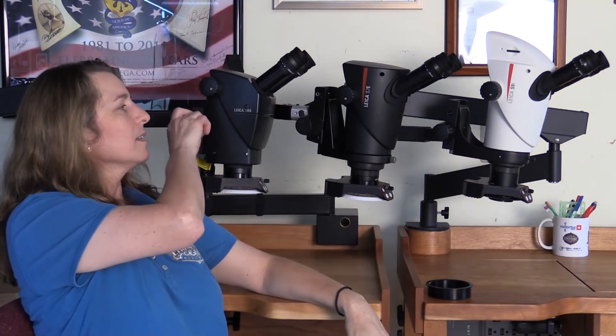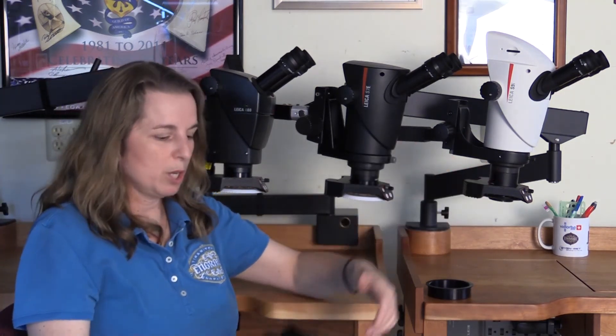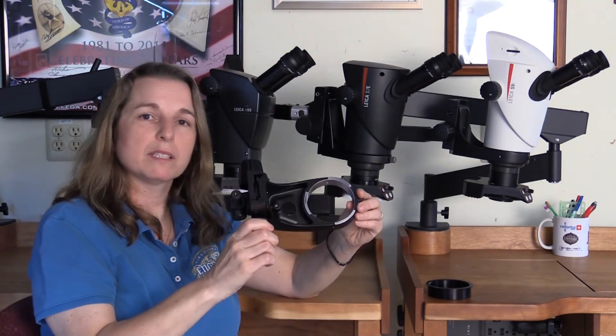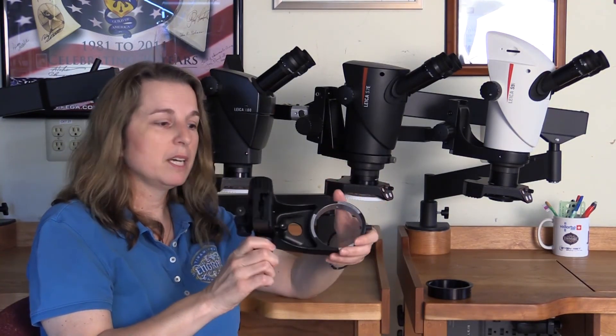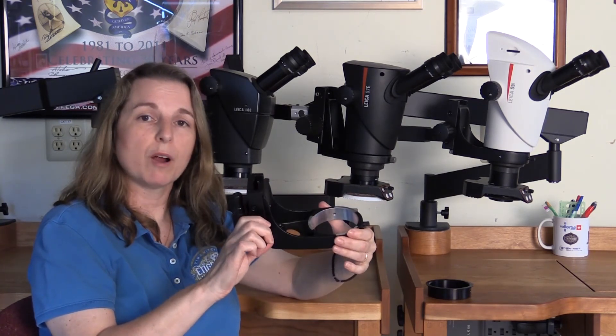In the A60, the mechanism is built into the head. For these two scopes, you need a piece that's similar to this that the microscope would sit in. This is either called a focus mount or sometimes a bonder arm.